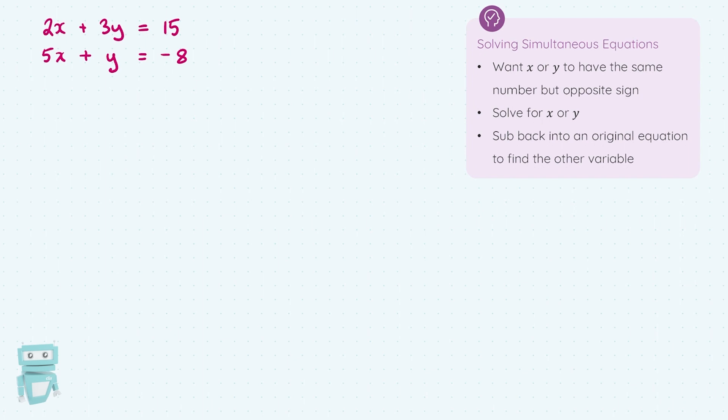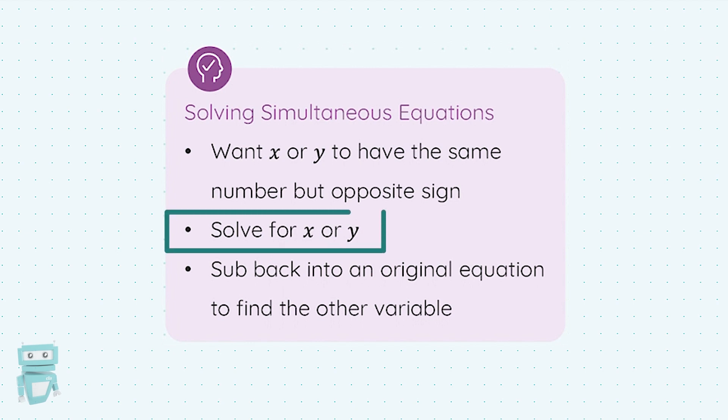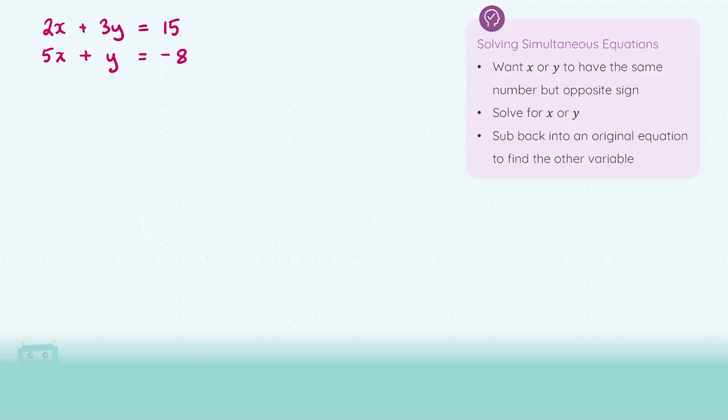What we're first going to want to do is to want x or y to have the same number but opposite sign in front of them. Secondly, we're going to solve for x or y, and then thirdly, we'll sub that back into the original equation to find the other variable. This will make sense in the motions. So let's solve a pair of equations here.